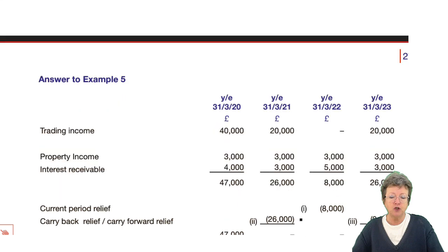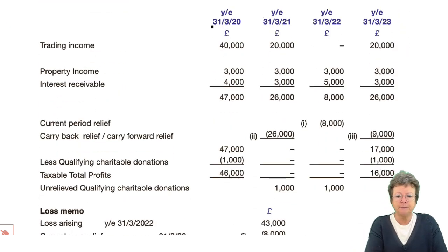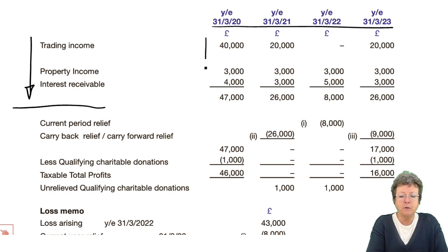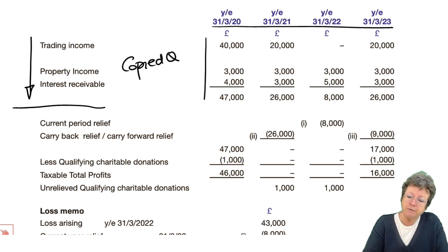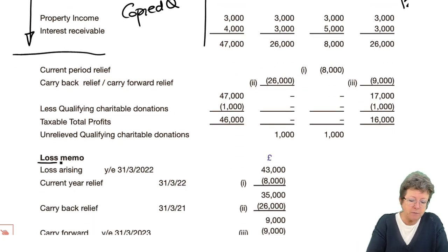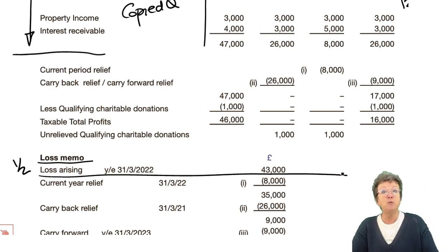Your answer should look like this — years across the top, pro forma down the side. You've done this by copying all of that from the question, and you've earned yourself probably one and a half marks there. You've set up your loss memorandum and got half a mark for putting that into the pro forma — that's two marks. Well done.